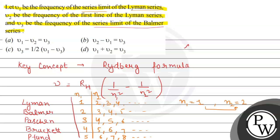Let us write the final answer. Option A: ν1 minus ν2 equals ν3 is the correct answer. Options B, C, and D are incorrect. Hope the solution was understandable.